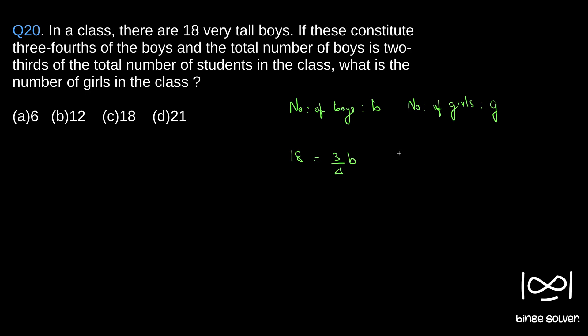And the total number of boys, which is B, is two-thirds of the total number of students in the class. So two-thirds of total number of students is B plus G.